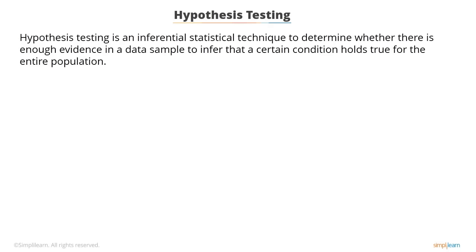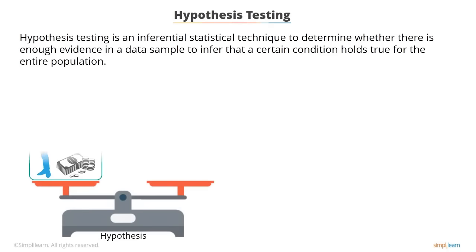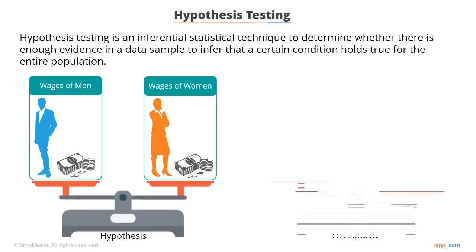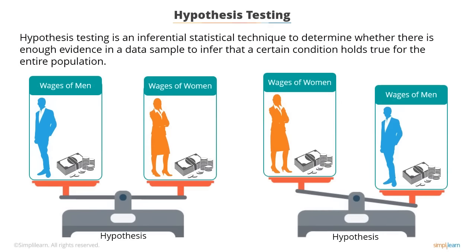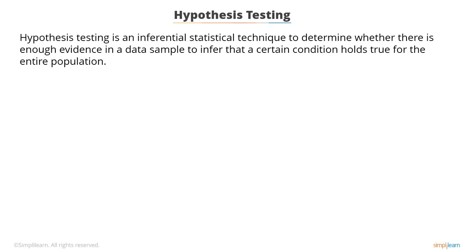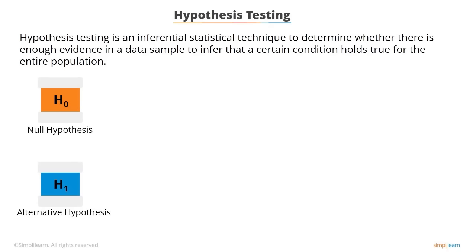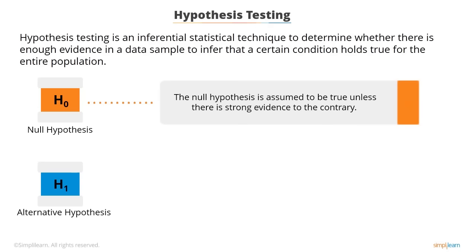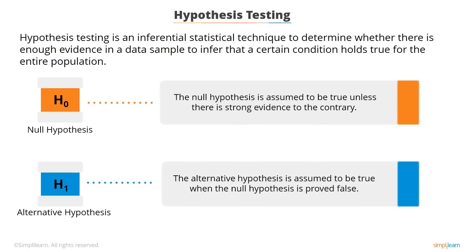For example, one hypothesis might claim that the wages of men and women are equal, while the other might claim that women make more than men. Hypothesis testing is formulated in terms of two hypotheses: the null hypothesis (H-null) and the alternative hypothesis (H-1). The null hypothesis is assumed to be true unless there is strong evidence to the contrary. The alternative hypothesis is assumed to be true when the null hypothesis is proven false.